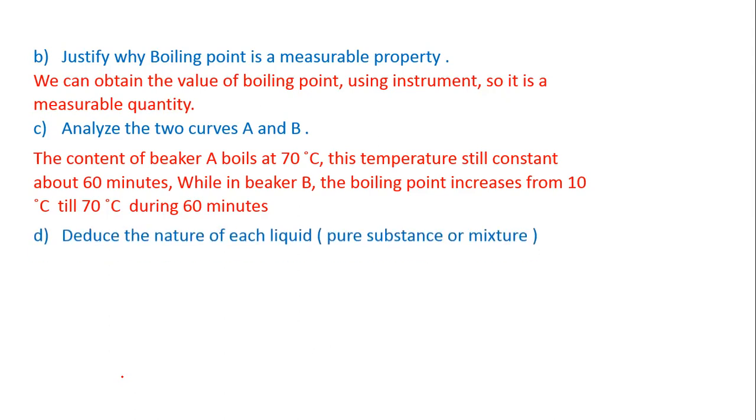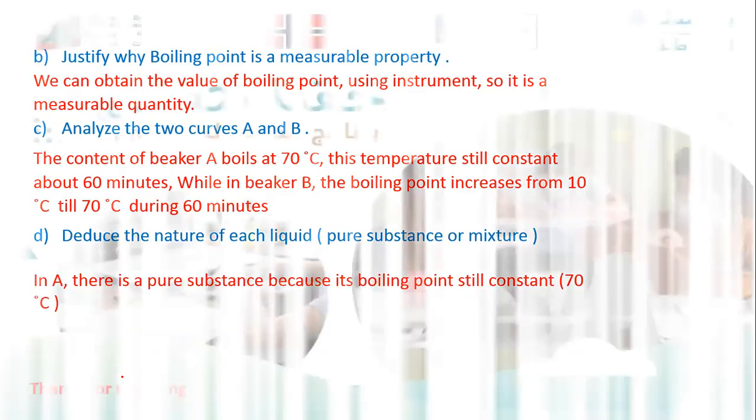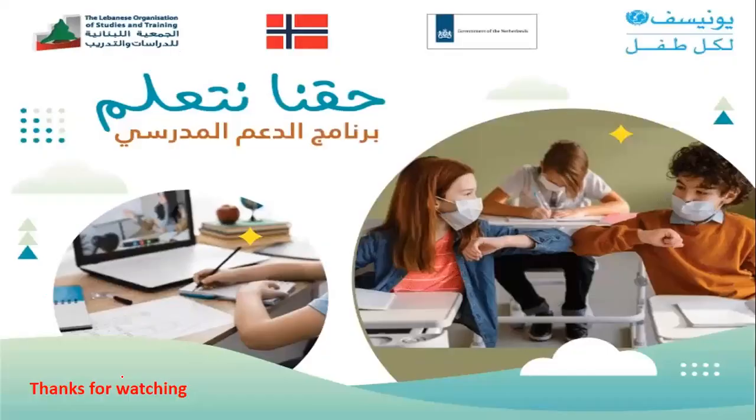Deduce the nature of each liquid, pure substance or mixture. In A, there is a pure substance because its boiling point stays constant at 70 degrees Celsius. And in B, it is a mixture.